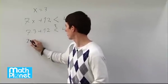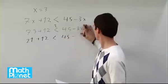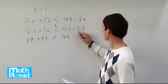7 times 3 is 21 plus 12 less than 45 minus, this was supposed to be a 3, so 3 times 3 is 9.